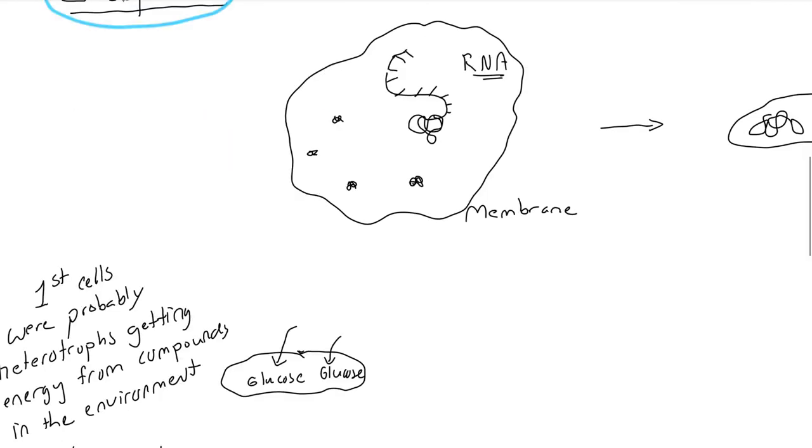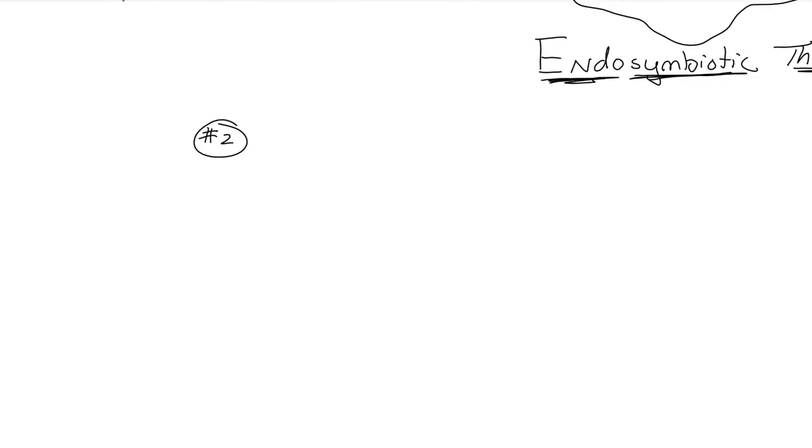Second exception to the cell theory is that viruses are not considered living things. They're not cells. The reason being, viruses cannot reproduce by themselves. They need a host.